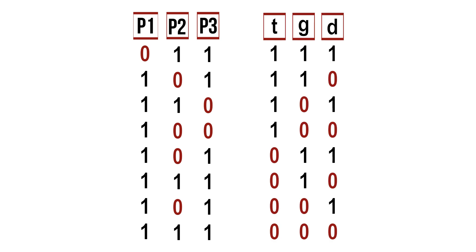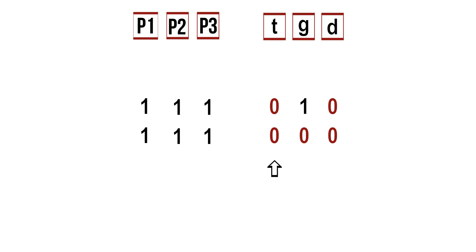We have now evaluated all three premises for all possible situations. The conclusions we want to test are: t for Trudy is innocent, g for Doug is innocent, and d for Dallas is innocent. Since we are only interested in situations where all the premises are true, we eliminate all situations in which at least one of them is false. In every situation where the premises are true, the statement 'Trudy is innocent' is false.